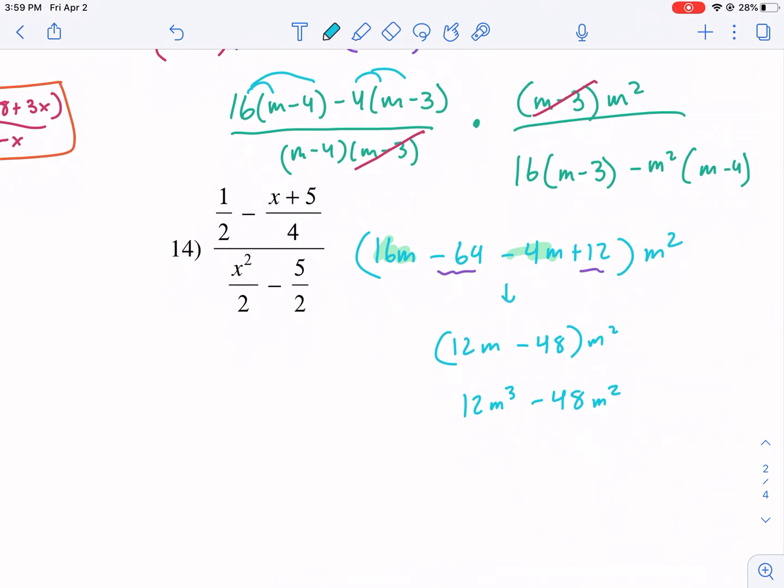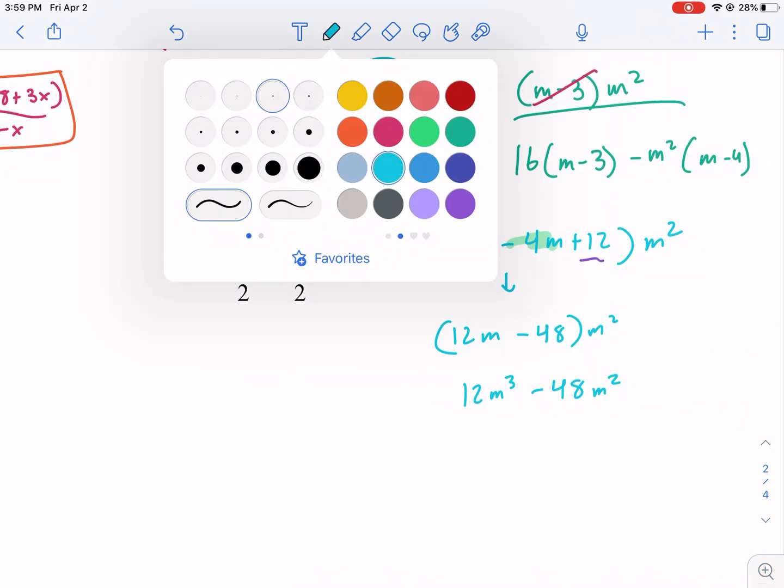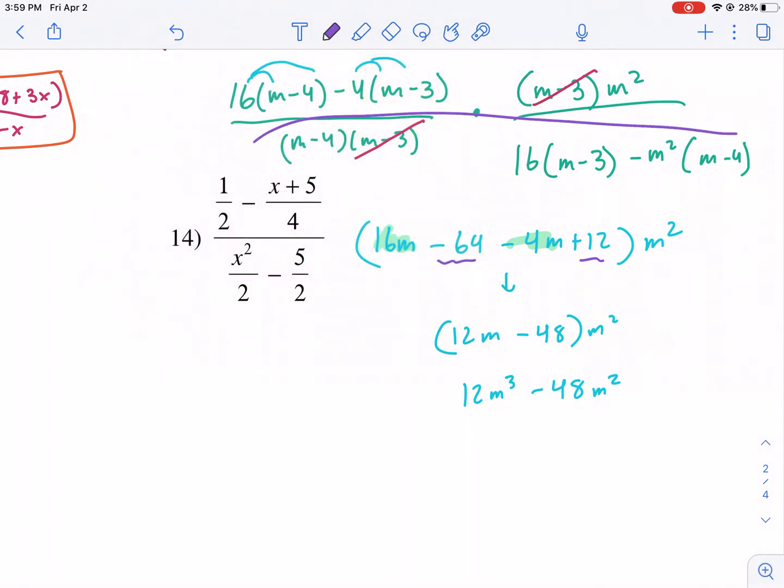It looks a little bit better than I started, but now I have to worry about the denominator, which is also going to be a headache. So this is my denominator. I already canceled the m minus 3, m minus 3. So I have the m minus 4,